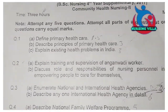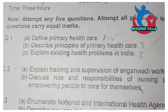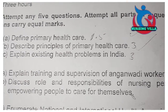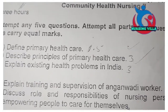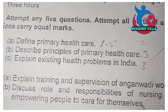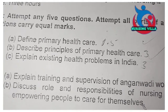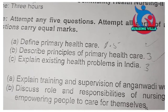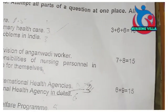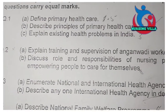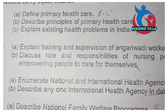We start with question number one, which contains three parts: A, B, and C. Question A: define primary health care. Question B: describe principles of primary health care. Question C: explain existing health problems in India. This contains 3 plus 6 plus 6 marks, equal to 15 marks.